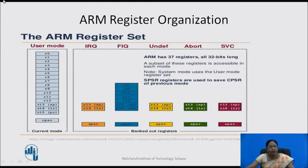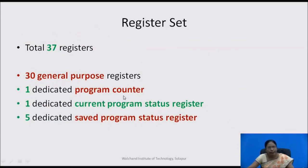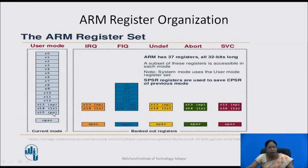In the diagram, user mode has 16 registers and CPSR. When the mode changes — for example in interrupt request mode — two registers are banked out along with one SPSR register. R0 to R12 are common registers. There is 1 dedicated CPSR, 5 SPSRs, and 1 dedicated program counter. The program counter is not banked out in any case, and neither is the CPSR.